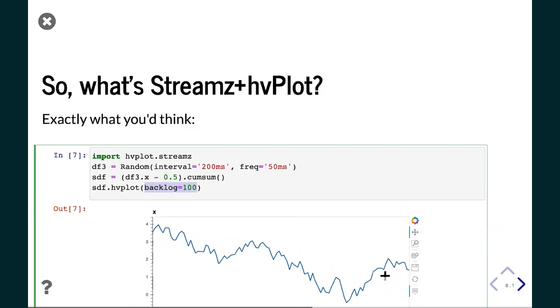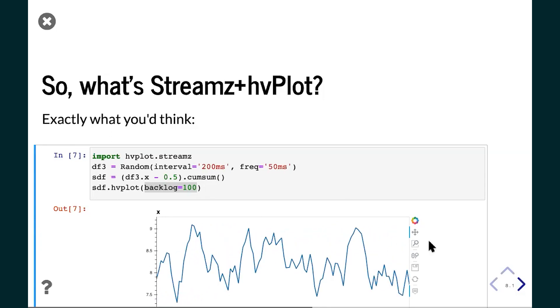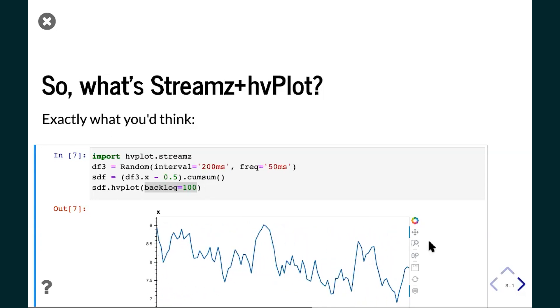If you then call hvplot on that, you get a plot where the data itself is automatically updating. Here I gave it a parameter called backlog, and that tells it to keep only the most recent 100 entries. And that's why you can see it sort of scrolling off to the left and disappearing. If I were to try to drag it back, it's not there anymore. There's no more data over there.